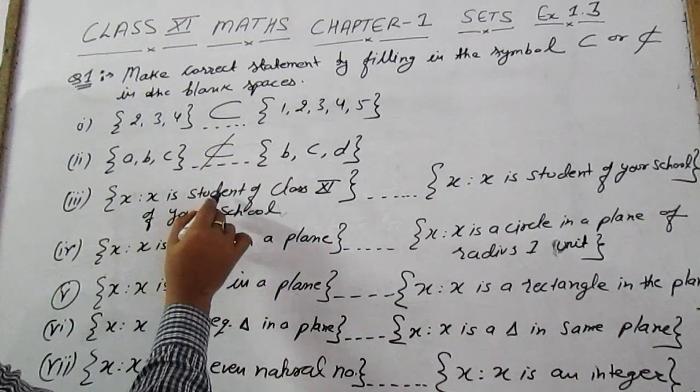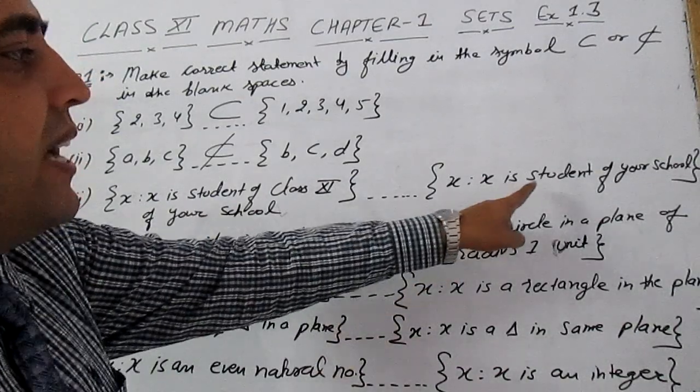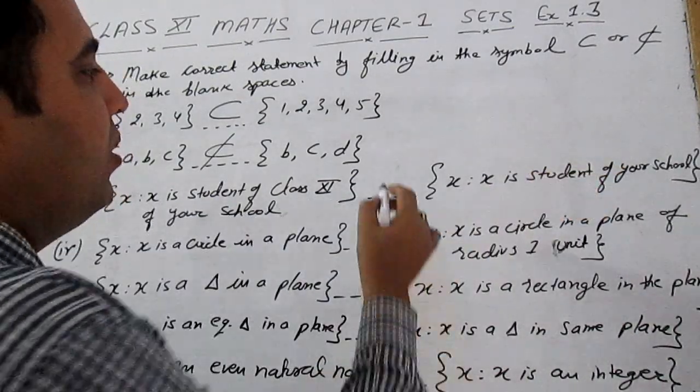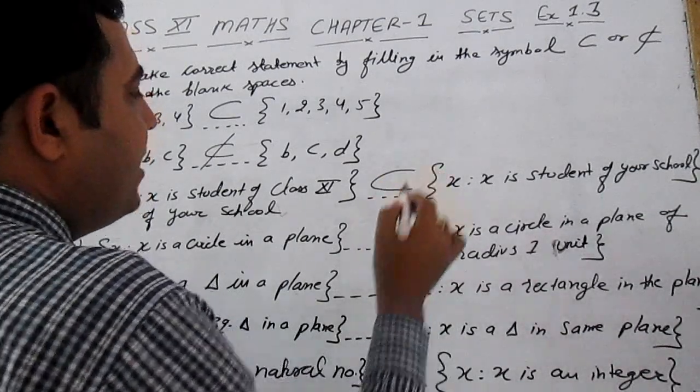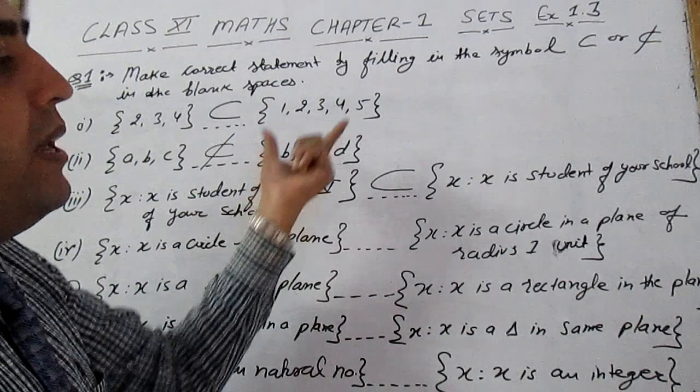x is such that x is a student of class 11 of your school, and x is such that x is a student of your school. Clearly it is a subset because a student of class 11 of the same school must be the student of that school.